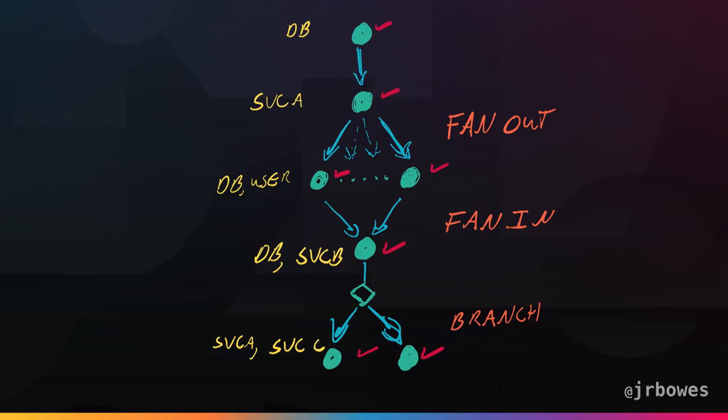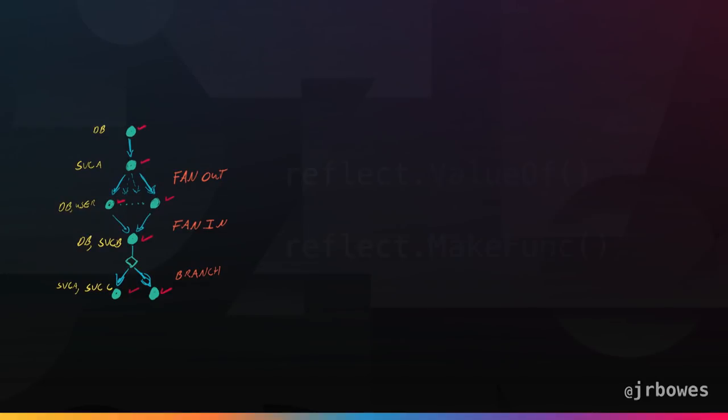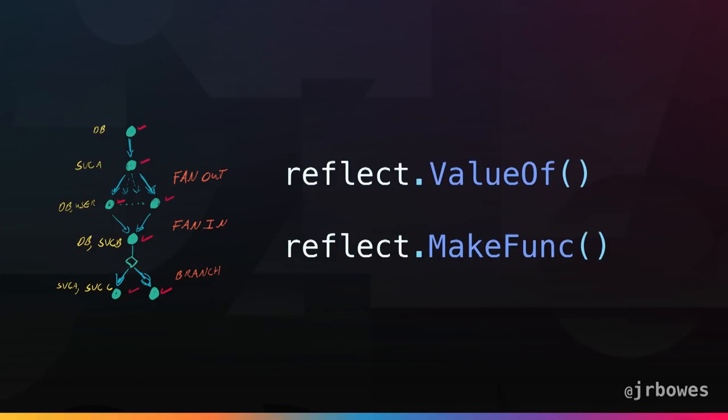Coming back to the state machine executor: what we decided to do was use reflect on each of the states and the functions that implemented them, and implement dependency injection with it. We were able to take each state, wrap it up nicely, have a pool of available things to inject, find the right things, put them into the functions, and then wrap this up in reflect.MakeFunc to make new functions that hid this complexity and had a standard interface for all steps. The state machine executor could then just walk through and call the step function to move through it.